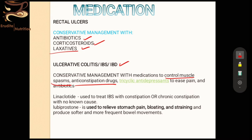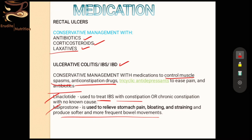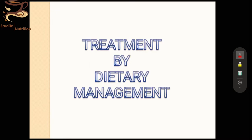Antidepressants are used to ease pain, along with antibiotics, linaclotide, and lubiprostone — some of the medicines used to treat IBS patients with constipation. Lubiprostone is used to relieve stomach pain, bloating, straining, and to produce softer and more frequent bowel movements. We won't go too deep into medication; we will focus on the dietary management of these problems.